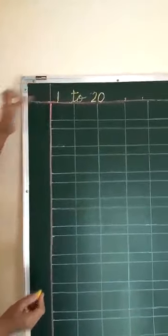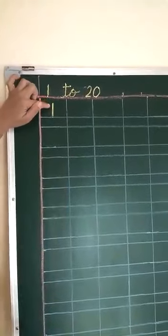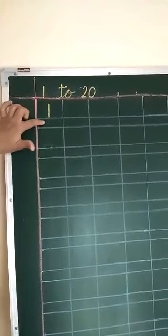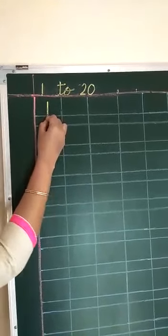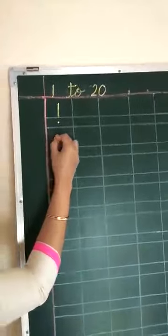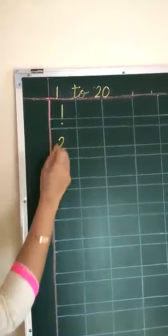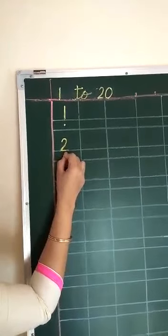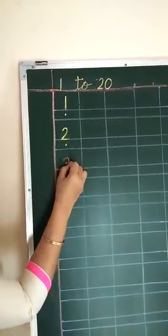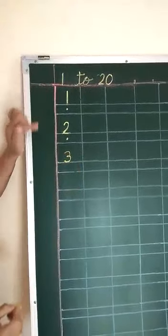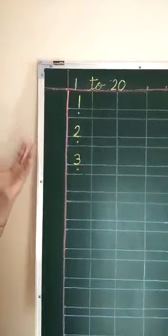Start from the first box. Write down 1. After writing 1, we have to leave 1 box, so we put 1 dot here. After 1 comes 2 — write down 2. After 2, again put a small dot. After 2, which number comes? 3. Write down 3. Then after, again put a small dot — means we have to leave 1 box.